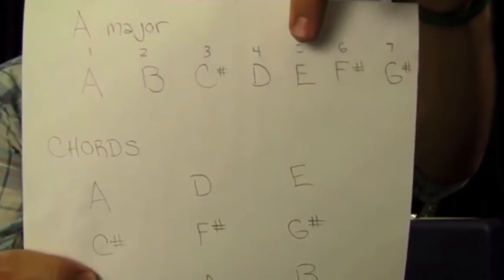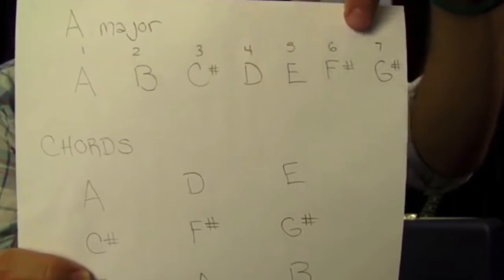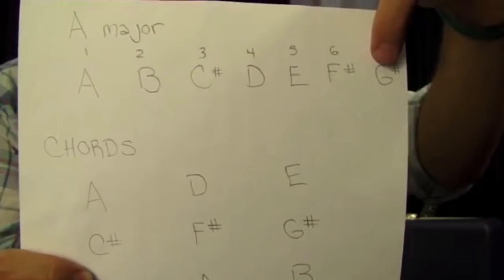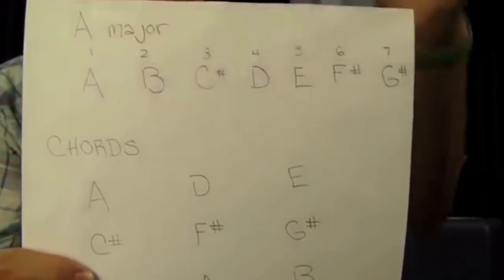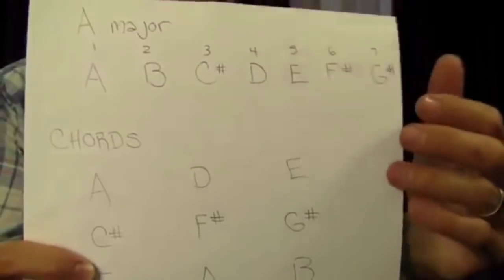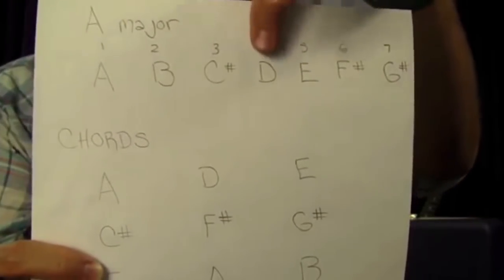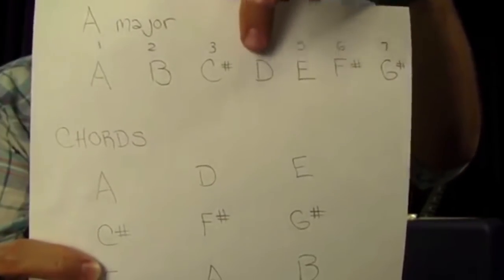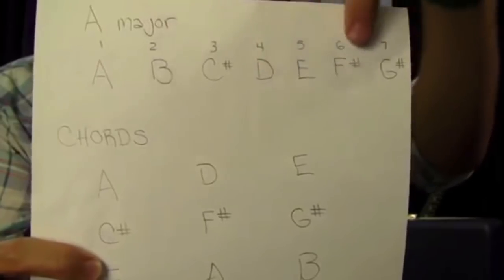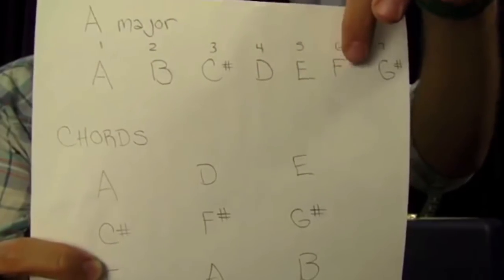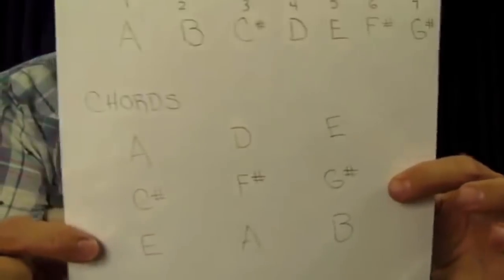Same thing with E: go to E, skip over F sharp to G sharp, skip over A to B. That formula is just one-three-five. So imagine on each root note of the chord — that's the one — you want to go to the third degree and the fifth degree. That's how you figure out per given chord what notes are going to work.